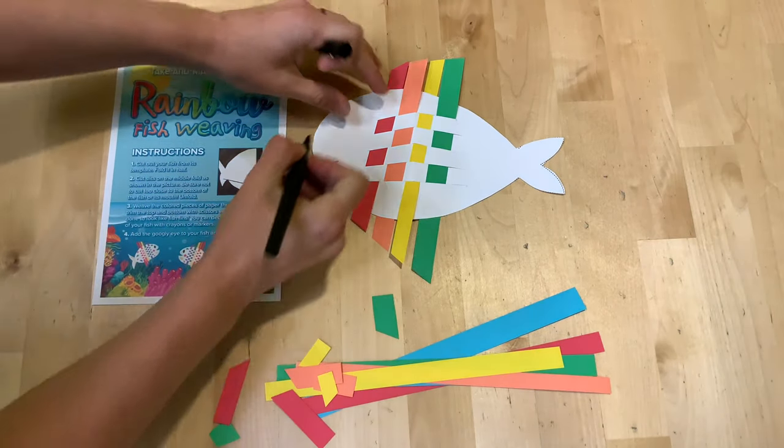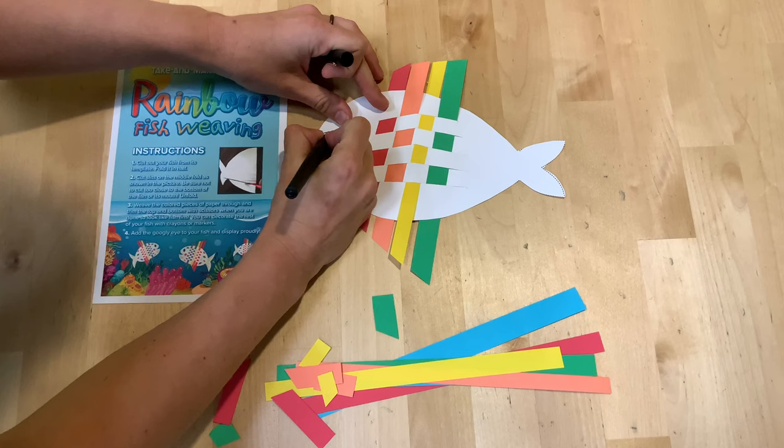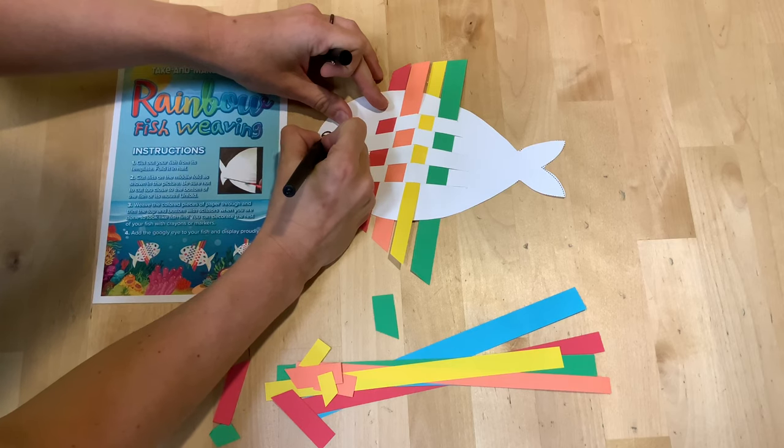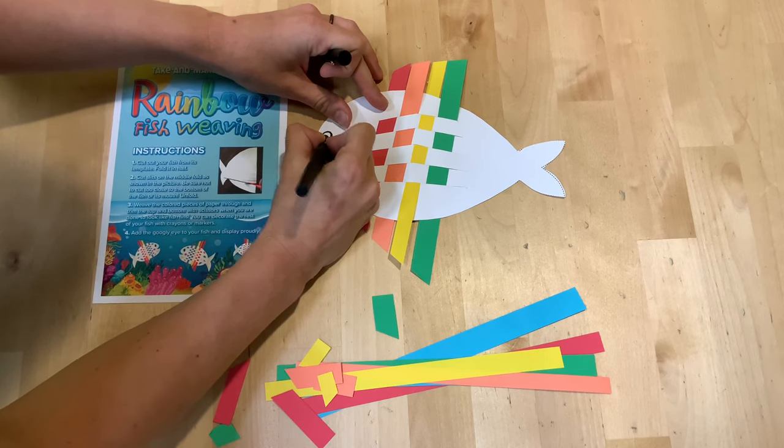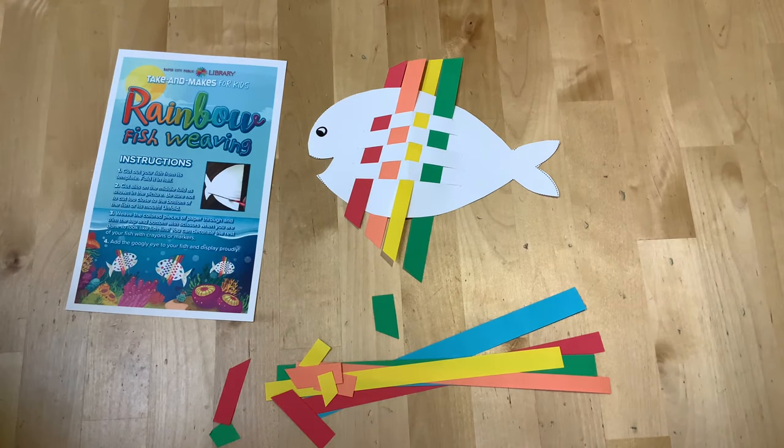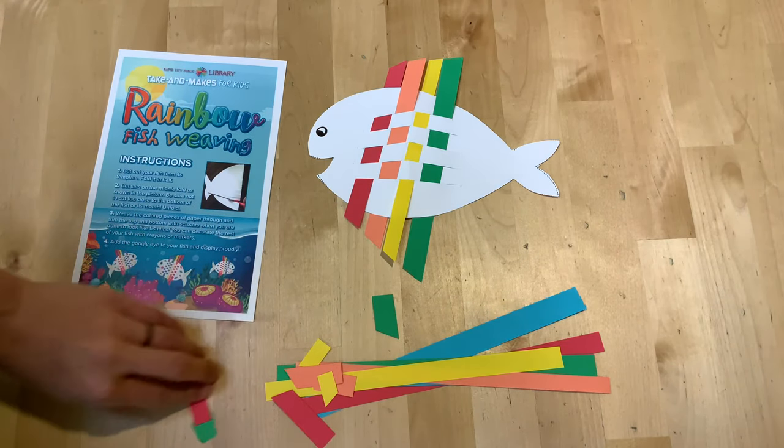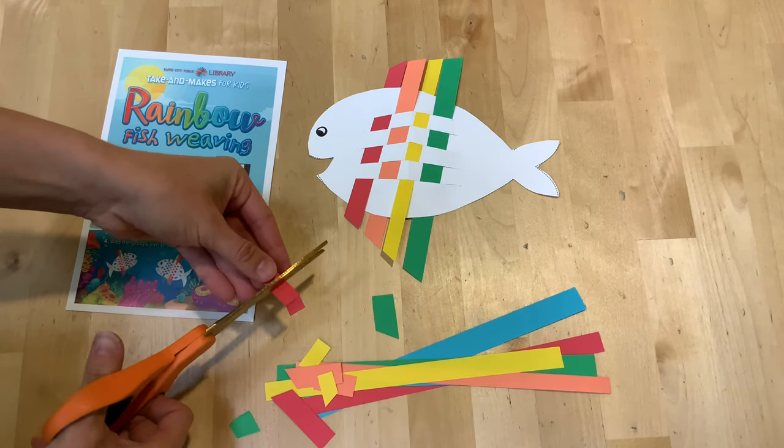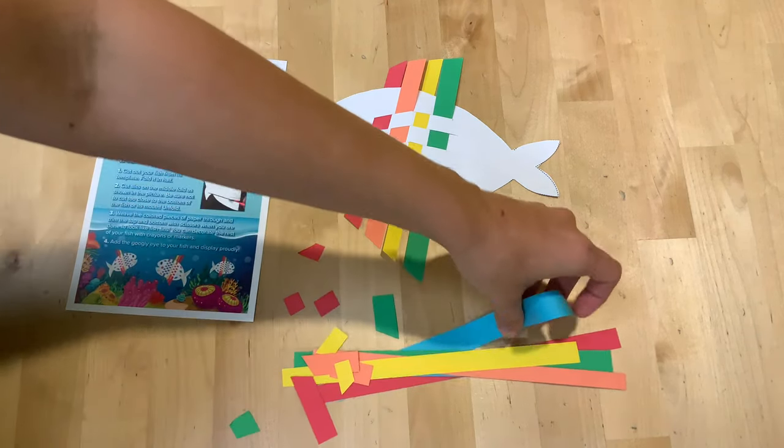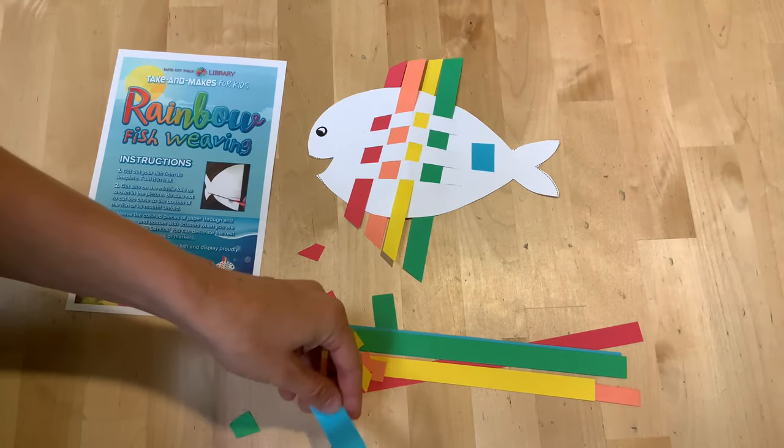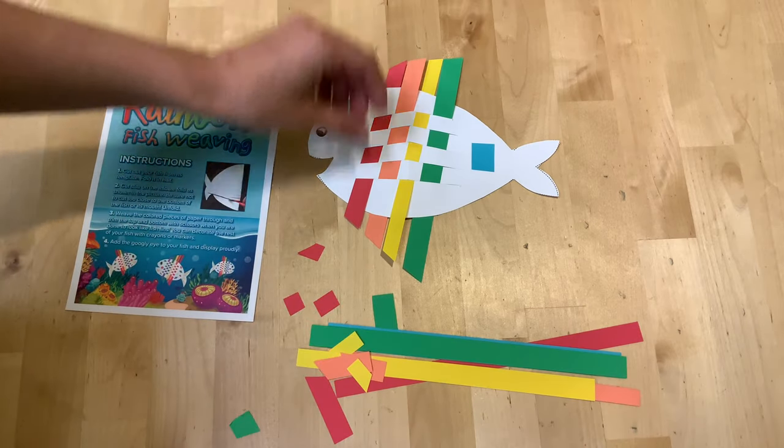And now you can draw on a little eye. And you can color your fish with whatever colors you like. Or you can take some scrap pieces of your colored paper and you can cut them up and glue them onto your fish for some more decoration.